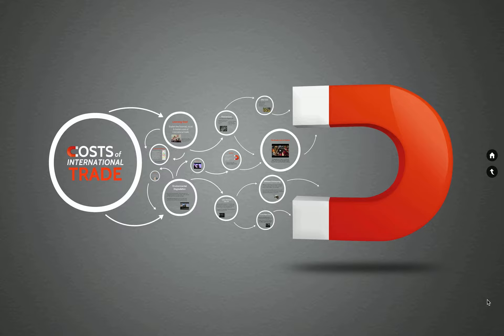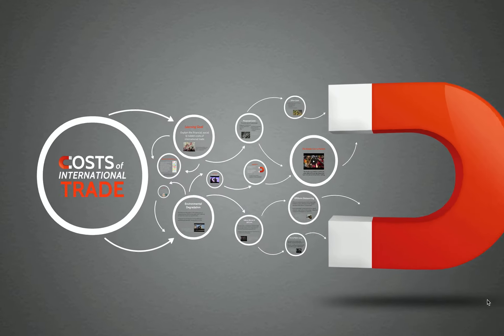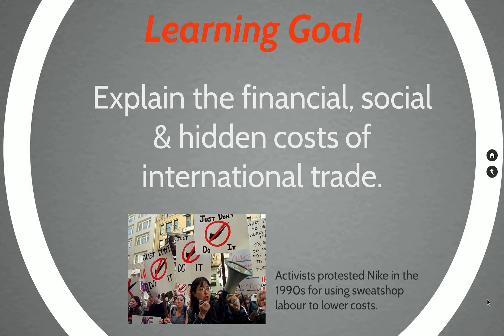We've talked about many of the good elements of trade, but these free trade policies need to be looked at with a critical lens, because there's two sides to every issue. We want to understand that there might be some financial costs, some social costs, and even some costs that are hard to clearly calculate.